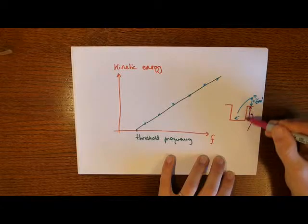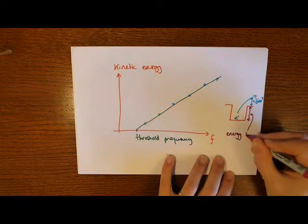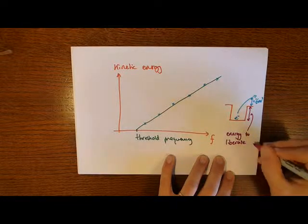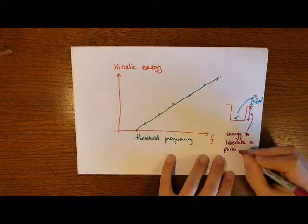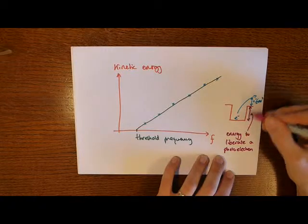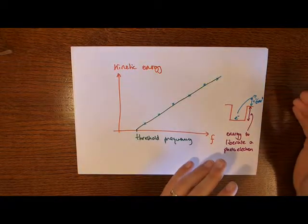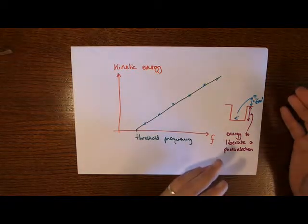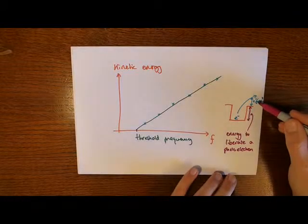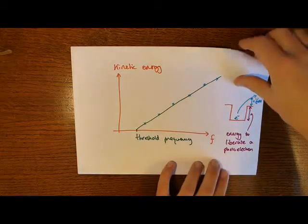The energy it has to have to get up to here is the energy required to liberate a photoelectron. In other words, if we give it just that amount of energy, then that electron is able to just escape our atom and do no more than that. It's not moving very fast. In fact, it's moving zero meters per second. Therefore, it's got no kinetic energy at all. That's the energy to liberate a photoelectron. That idea is very important.